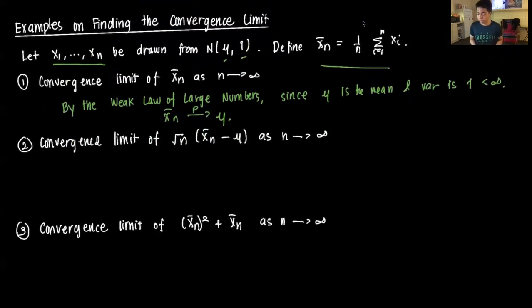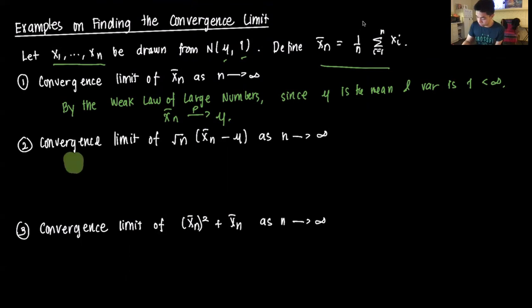Next, we find the convergence limit of √n times (x̄ₙ − μ) as n approaches infinity. Since σ² = 1, this implies that σ is also equal to 1.